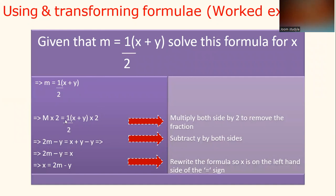2 divided by 2 is 1, so 2M equals X plus Y. Then what you need to do is subtract Y from both sides. So you have 2M minus Y equals X plus Y minus Y. So you have 2M minus Y equals X, and X equals 2M minus Y. We write the formula so X is on the left-hand side of the equal sign.